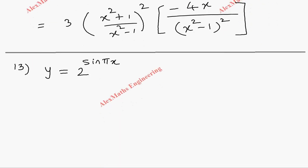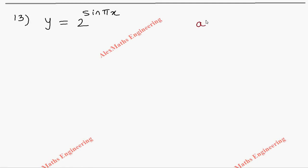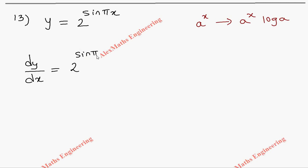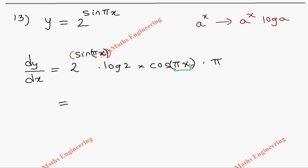Next: y = 2^(sin πx). We apply the formula: differentiation of a^x is a^x·log a. So dy/dx = 2^(sin πx)·log 2, then multiplied by the differentiation of the inner function sin(πx), which is cos(πx)·π. Rearranging constants in front: the final answer is π·log 2·cos(πx)·2^(sin πx).